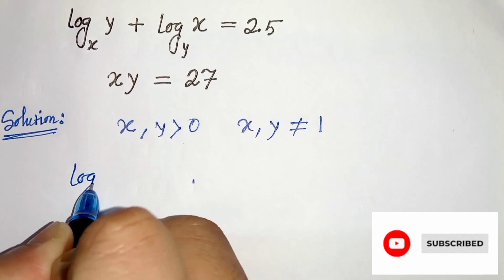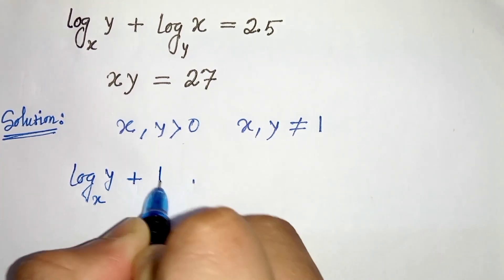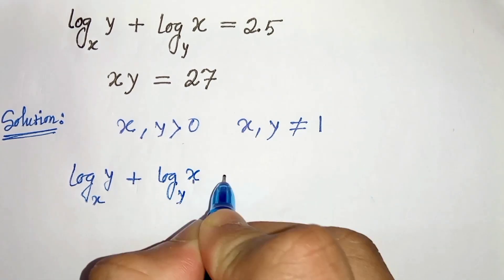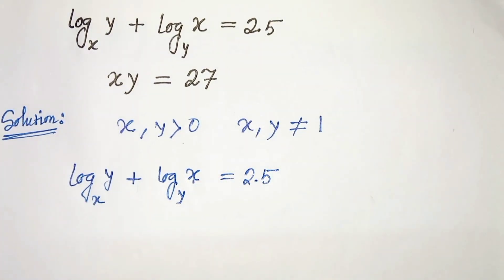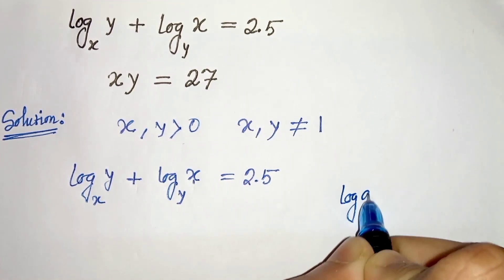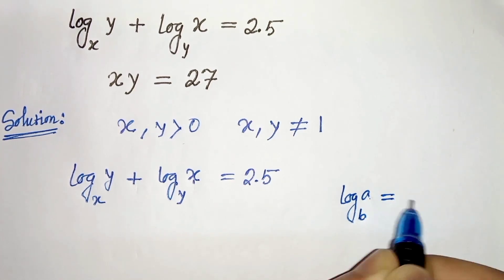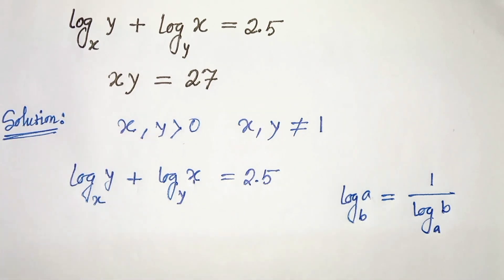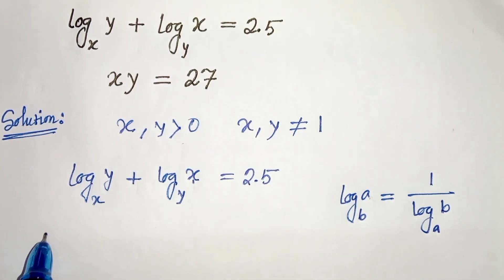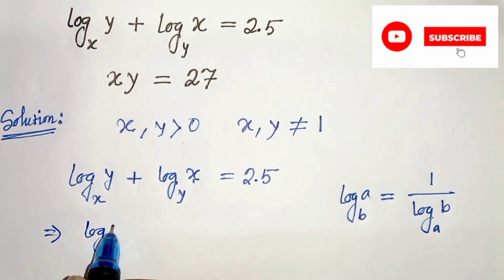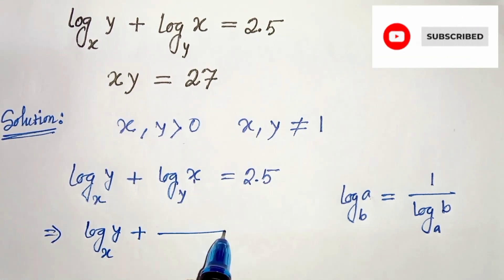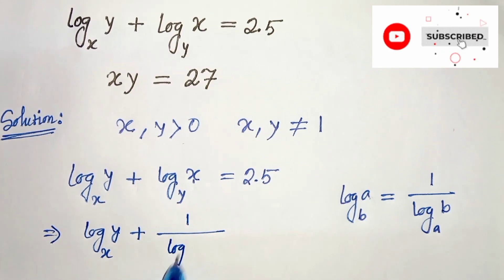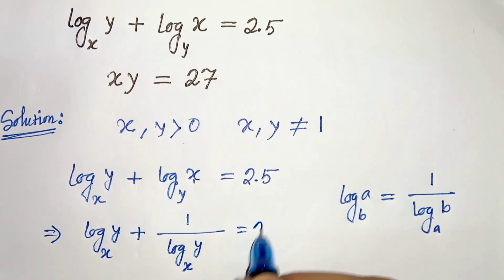The first equation is log of y base x plus log of x base y equals 2.5. We know the logarithmic property which says that log of a base b can be written as 1 divided by log of b base a — meaning a and b get interchanged. Applying this property, log of x base y becomes 1 divided by log of y base x, so the equation becomes: log y base x plus 1 over log y base x equals 2.5.